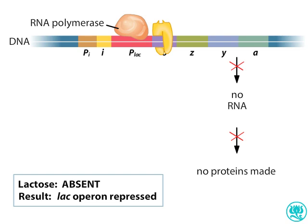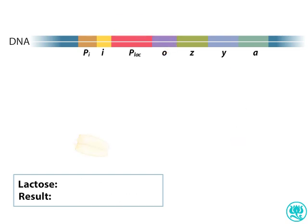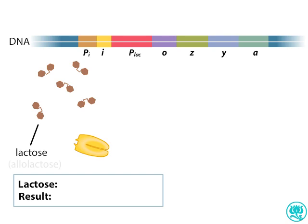The environmental signal that turns on the lac operon is lactose, but the actual inducer is allolactose — a molecule that forms from lactose once lactose enters the cell.